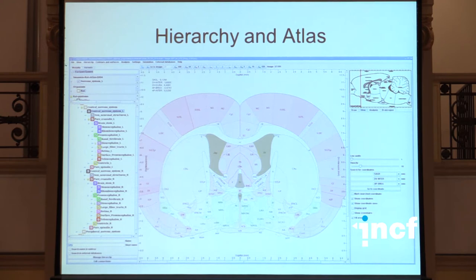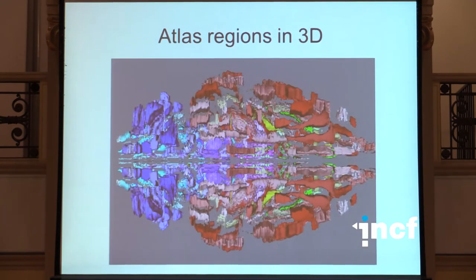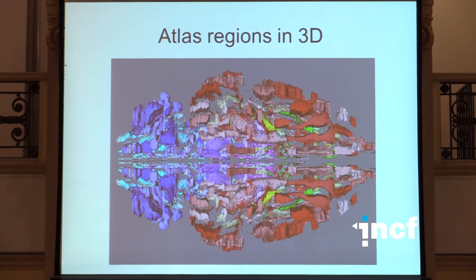Using these outlines, it's very easy to visualize and compute surfaces in 3D — for example, for all regions in the rat stereotactic atlas of Paxinos in an explosion view.